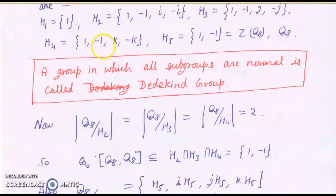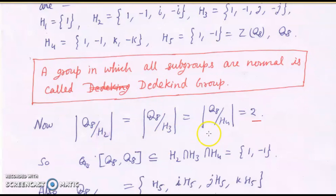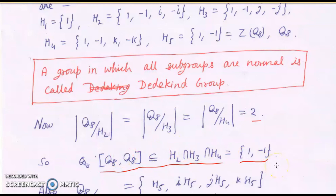H2, H3, and H4 all have order 4, so the quotient groups Q8/H2, Q8/H3, Q8/H4 each have order 2, hence are abelian. Therefore [Q8,Q8] is contained in H2, in H3, and in H4, meaning [Q8,Q8] ⊆ H2 ∩ H3 ∩ H4 = {1,-1}. So the commutator subgroup is a subgroup of {1,-1}, which has only two subgroups: the trivial subgroup H1 and {1,-1} itself.